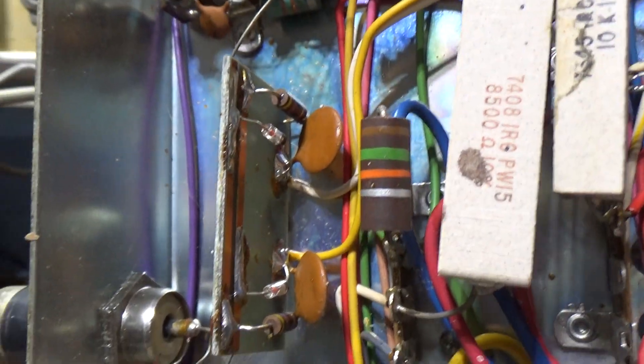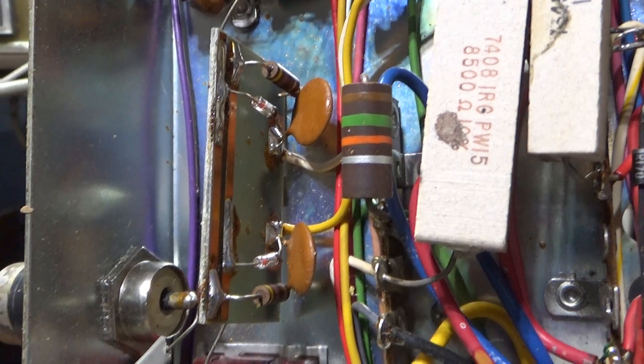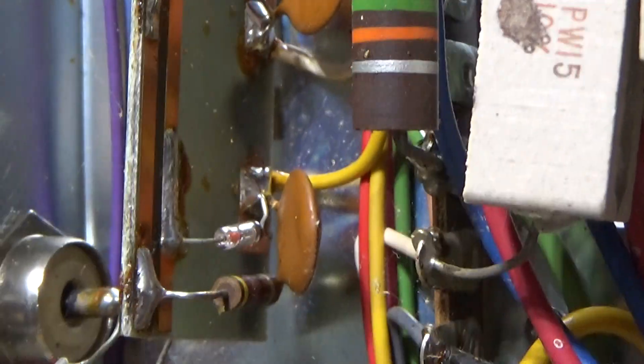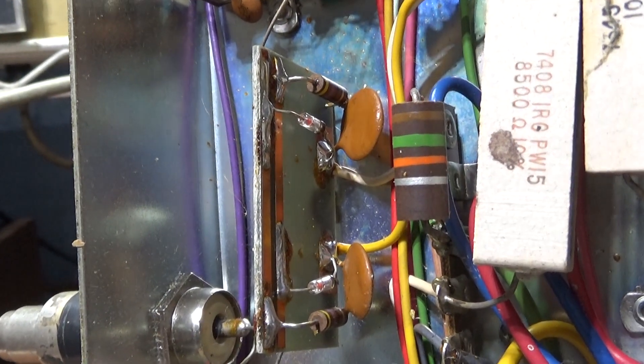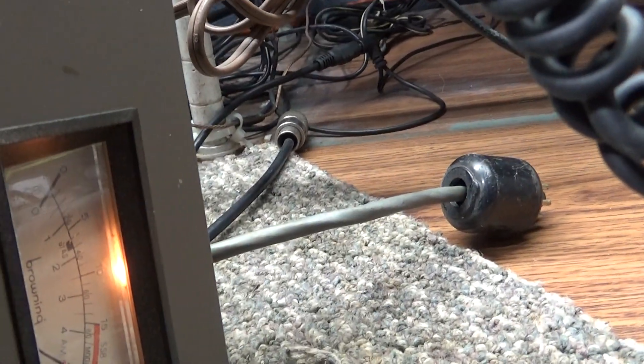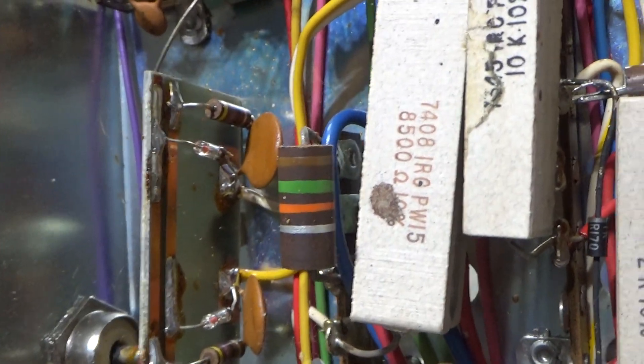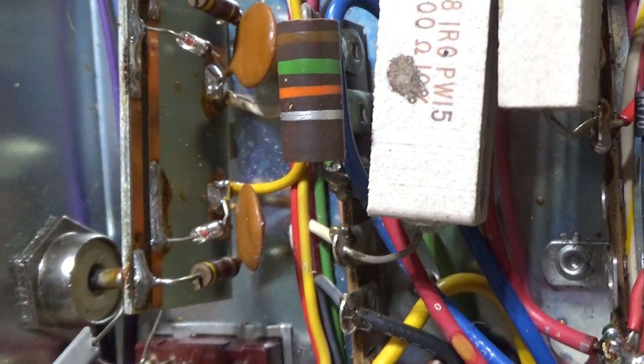That output goes over here to this board here, this small board here. That's basically your watt meter forward and reflected board right there. Trying to apply some logic to it - if that's the output board and I'm getting output on the meter, that's the output board after the final, and I'm getting output on the meter. That tells me the tube has got to be putting output, so the problem if it's not getting out to the antenna has to be after that.